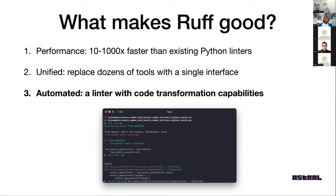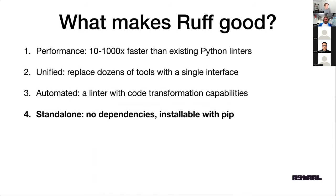Over time, Ruff is trending towards being a more and more powerful code transformation tool. You plug it into your stack, it identifies a bunch of problems and can hopefully fix most of them too. Lastly, since Ruff is written in Rust, it doesn't have any dependencies — you just install it with pip. We ship basically a single executable binary, packaged as a Python package using a tool called Maturin. You actually don't even have to install Python to use Ruff — you can drop in a Ruff executable anywhere and run it.